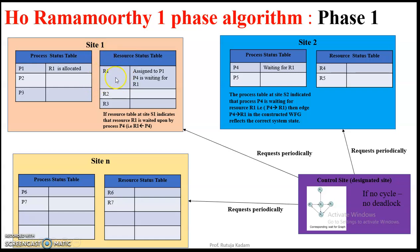And this resource R1 in the resource table, just see the entry that R1 is assigned to P1. However, some other process P4 which is on site 2 is waiting for R1. Similarly, at site 2, at the process table of P4, we should also have this entry that P4 is waiting for resource R1. So if both the entries are there, then there is no problem.